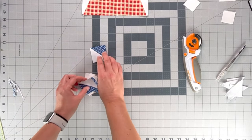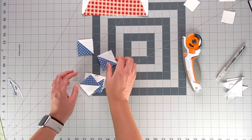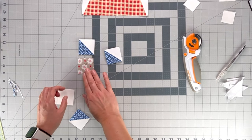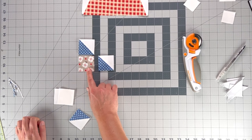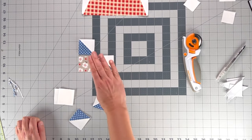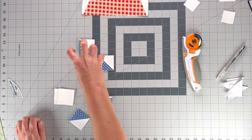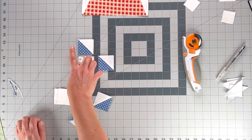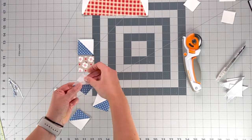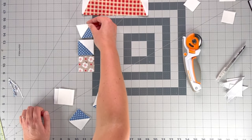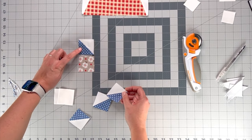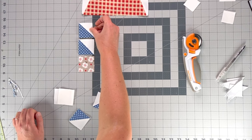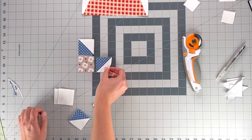Here are the half square triangles that we just made, and I pressed them and trimmed them. And then we're going to lay out our friendship block. Now, I have a hard time seeing the half square triangles turned correctly because you want them to go around the block in a specific direction.